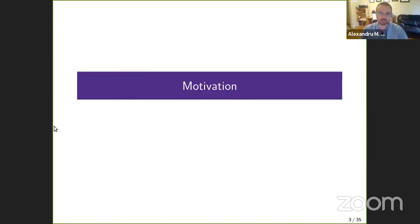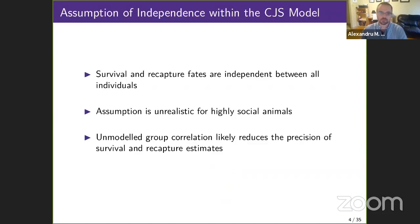So I'll begin with some background. As most of us probably already know, the CJS model is a common method of estimating the survival rates of a wildlife population that was sampled using mark recapture methodologies. I want to draw your attention to one of the main assumptions of this model, which is that individual fates are independent from one another. This is often unrealistic among social animals and can lead to reduced precision for estimates of survival and recapture.